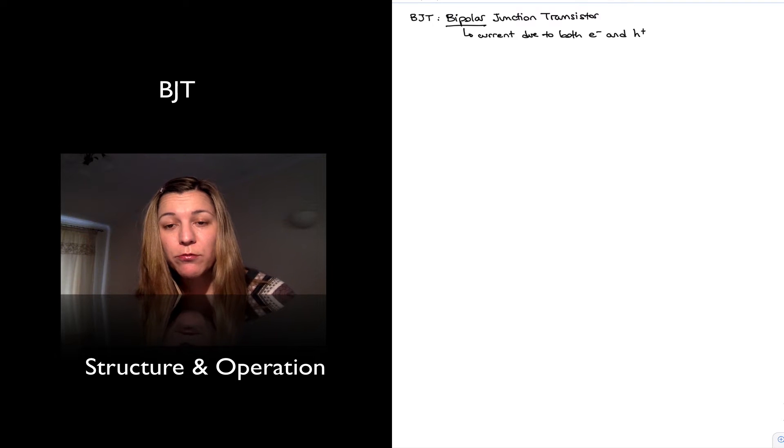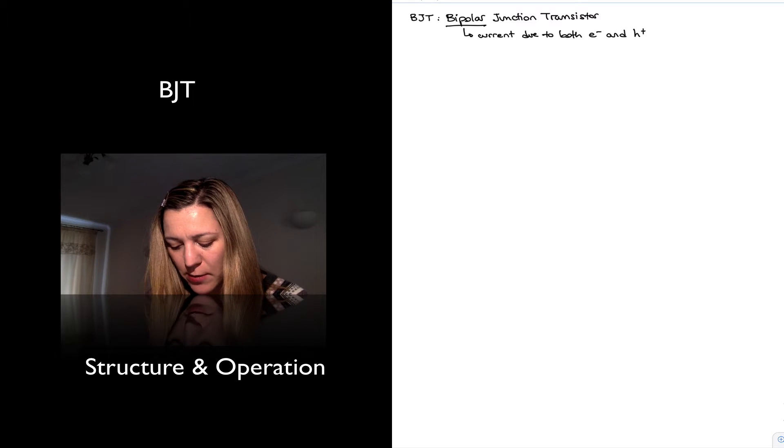There are two types of BJT transistors, NPN or PNP. And so let's review, for the sake of example, the operation of the NPN first.